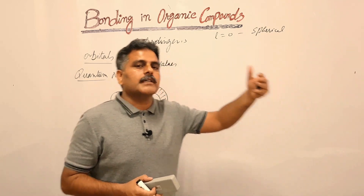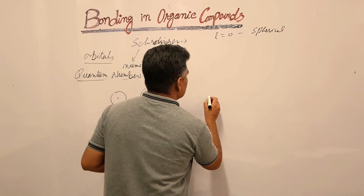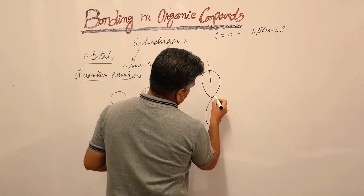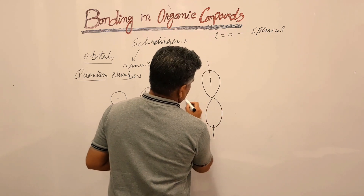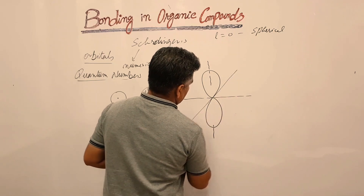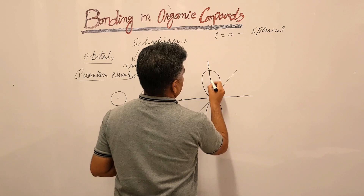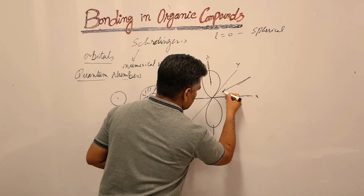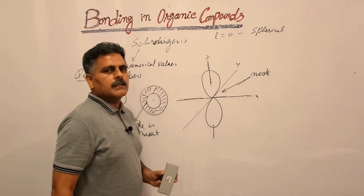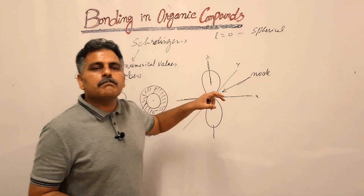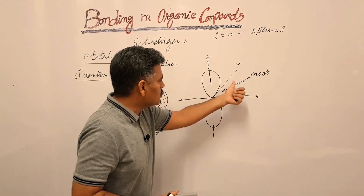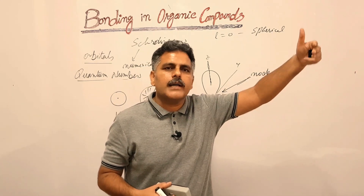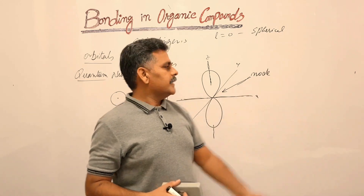For the p orbital, we have three directions along the x, y, and z axes. There is a nodal area present between the two lobes of each p orbital. These three p orbitals are mutually perpendicular to each other, and a nodal area is present between these two planes. As you move from 1s to 2s to 2p and onward, the number of nodes increases and the energy of orbitals also increases.